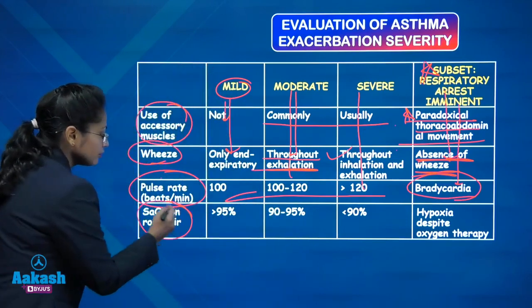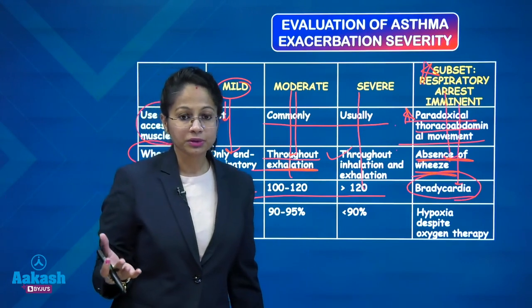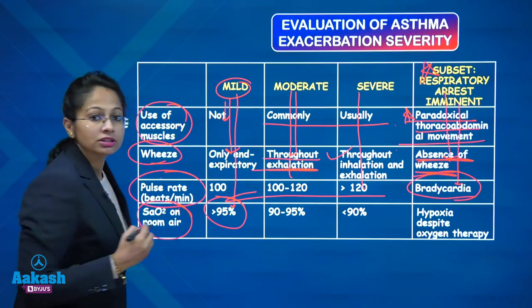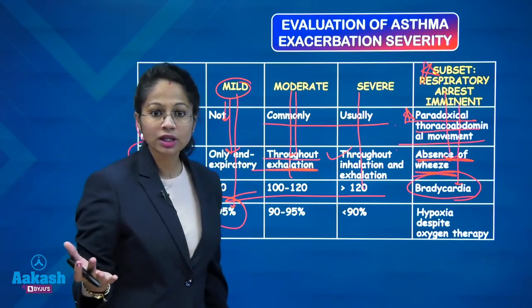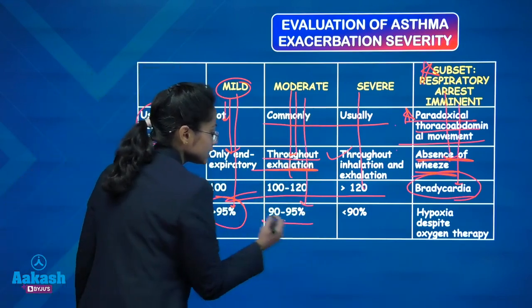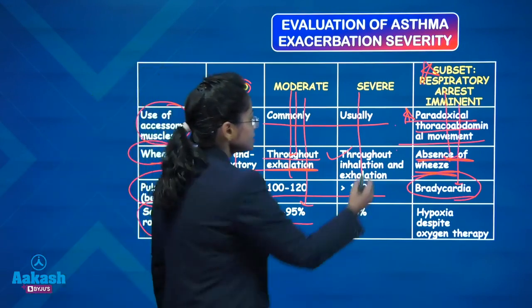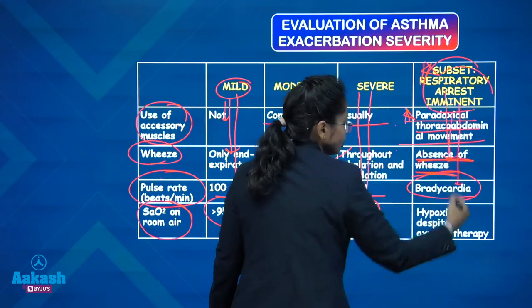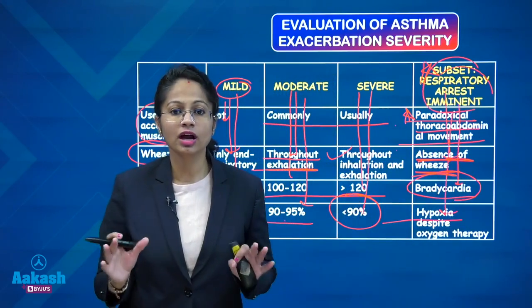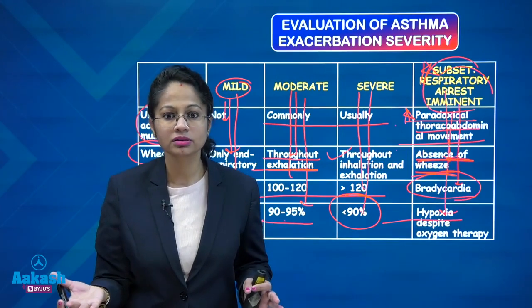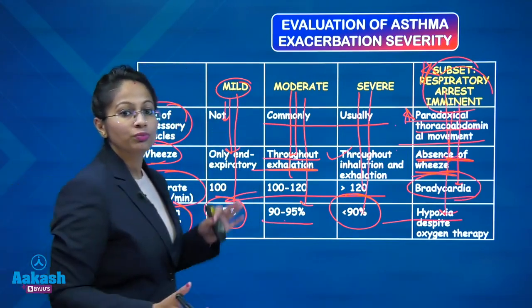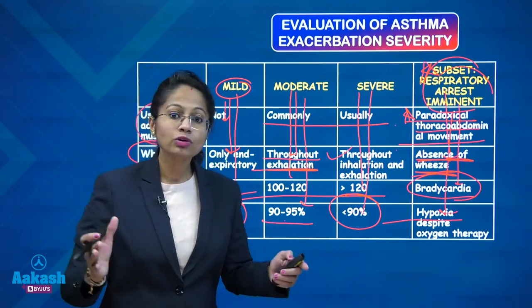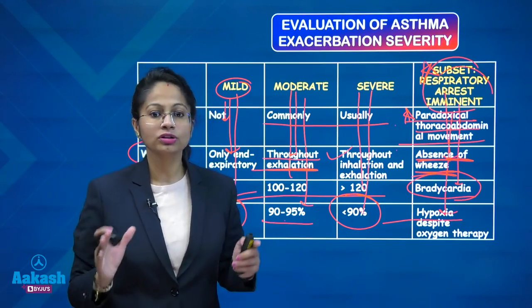SpO2 in mild patients at room air is normal, more than 95%. In moderate cases it is 90–95%. In severe, less than 90%. In impending respiratory failure, saturation does not increase even after application of oxygen by mask. This is how you differentiate and assess the severity of bronchial asthma exacerbation, and management depends upon the severity.